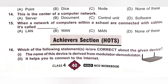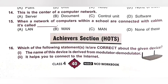Fifteenth. When a network of computers within a school are connected with cables, it is called a dash. A. LAN, B. WAN, C. MAN, D. None of these. When a network of computers within a school are connected with cables, it is called Local Area Network — LAN. Option A is the correct answer.